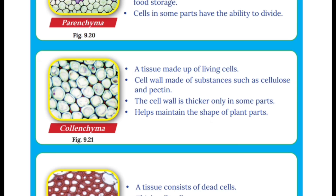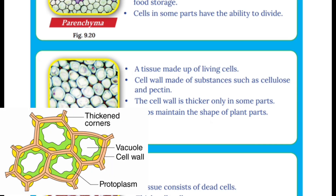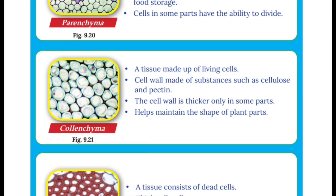Next, colenchyma. A tissue made up of living cells, with cell walls made up of substances such as cellulose and pectin. The cell wall is thicker only in some parts. It helps to maintain the shape of the plant part.